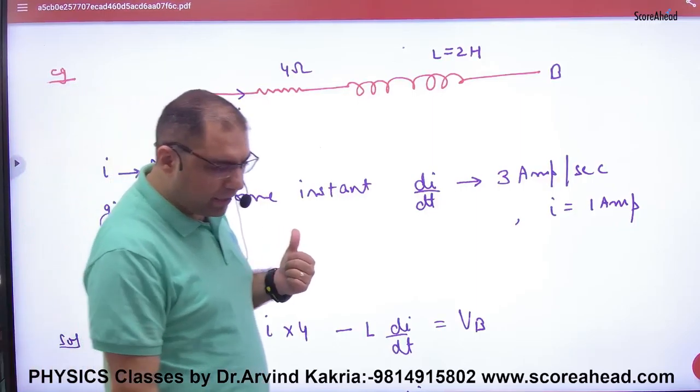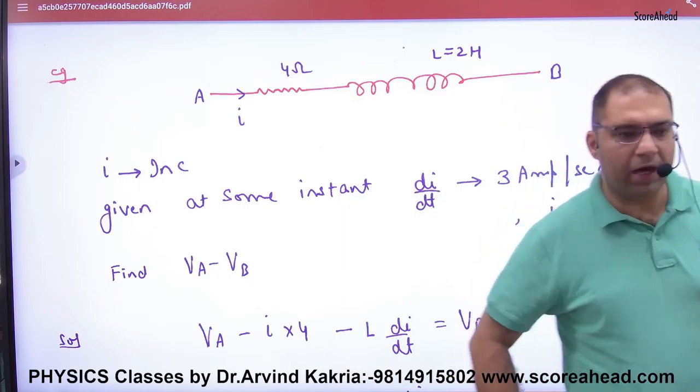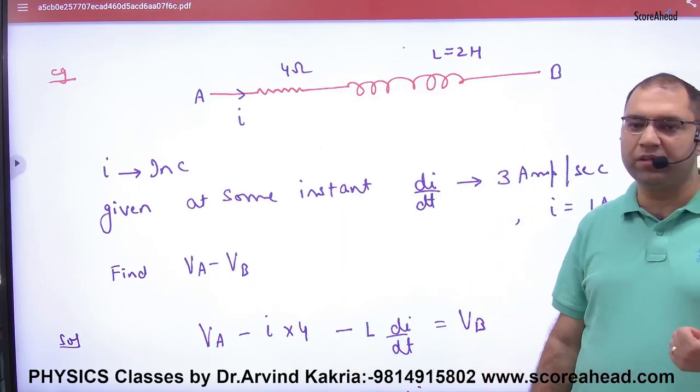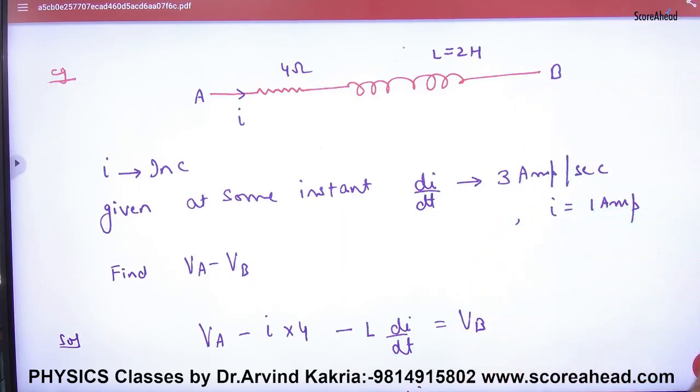In alternating current, there was a very important question in your last sheet. Suppose you have a resistor and an inductor, so current is passed and current is not constant, it is increasing.